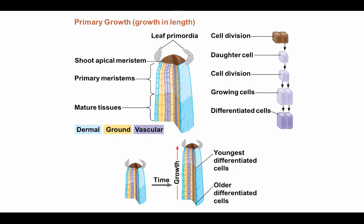In a more diagrammatic form, we see the arrangement of primary meristem tissues. At the very tip are the dividing cells, guarded by leaf primordia. The vascular tissue is in the center, ground tissue outside of it, and dermal precursors on the outside. These cells divide in a way that elongates the tip. The youngest cells are closest to the meristem, with older cells closer to differentiation. As we move from source to older tissues, cells become longer, resulting in overall elongating growth in the shoot or root.